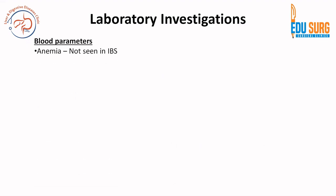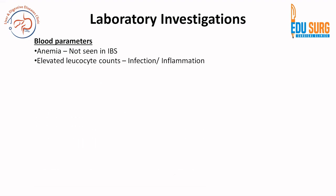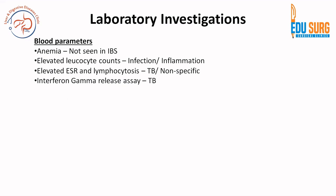Moving to blood parameters: anemia is not seen in irritable bowel syndrome, so that is a differentiating feature. Elevated leukocyte counts are common in infection or inflammation. Elevated ESR and lymphocytosis can be seen in TB or can be nonspecific.